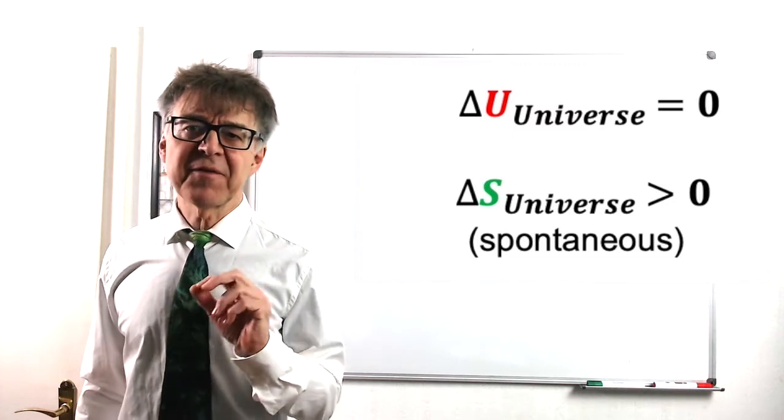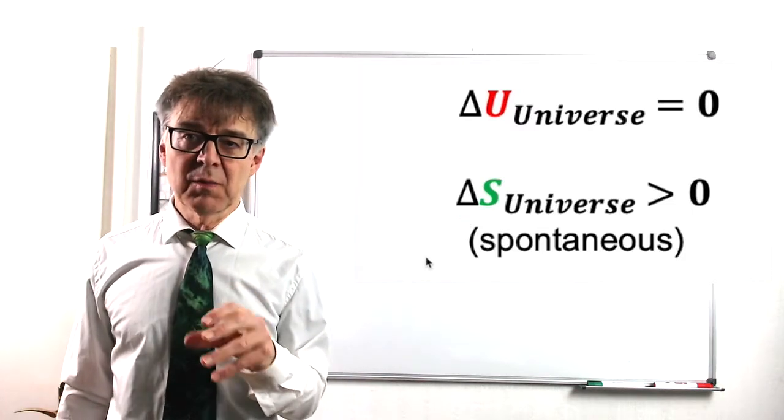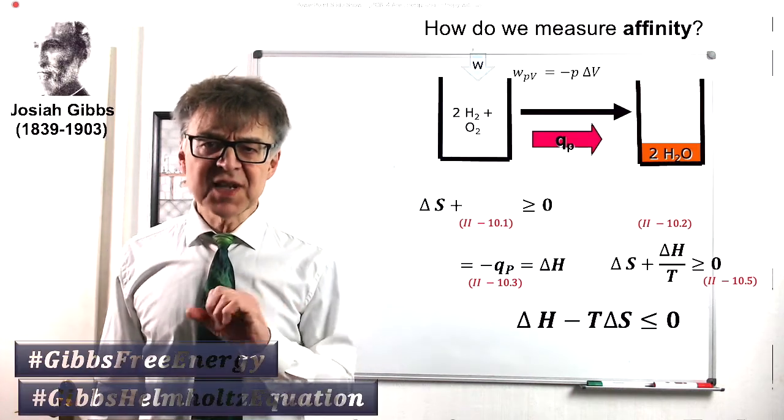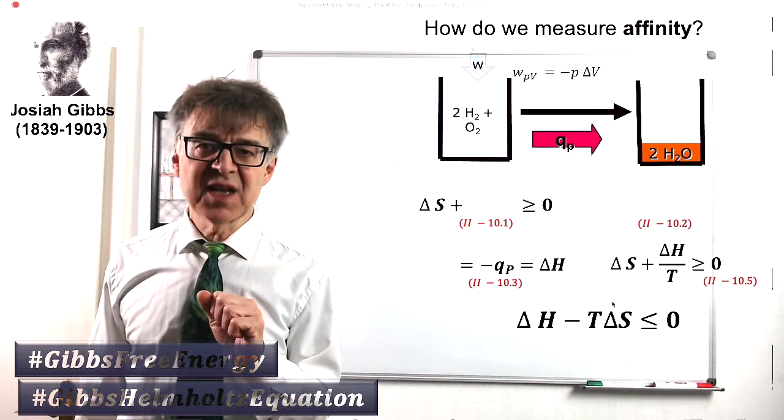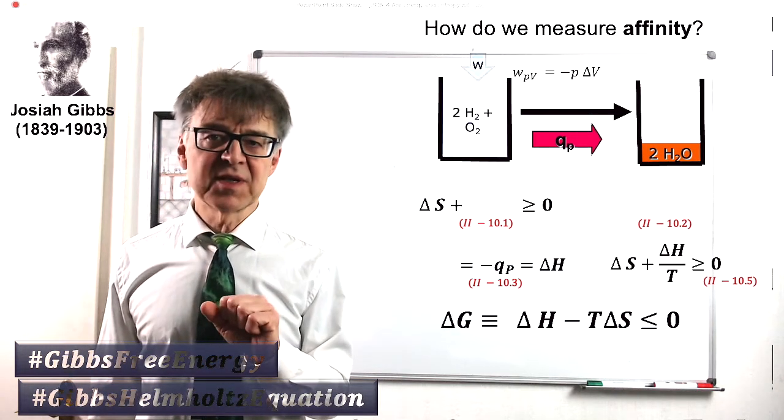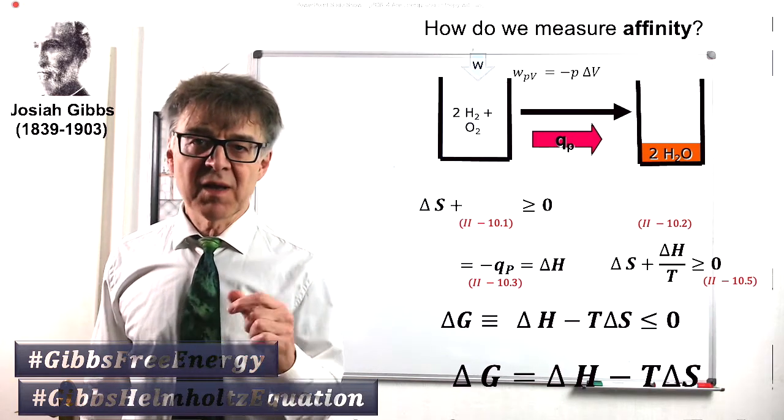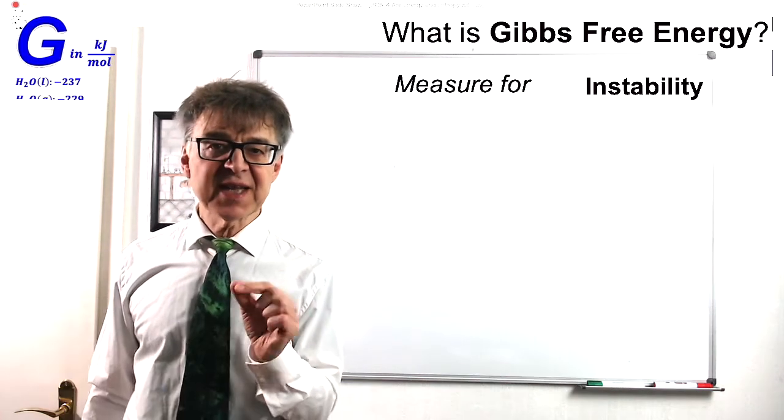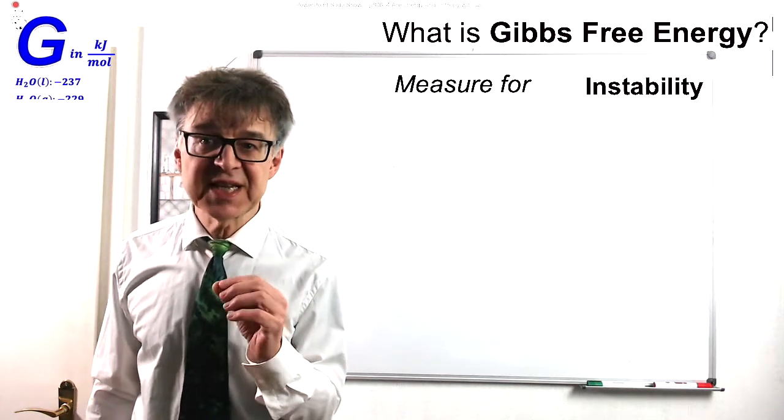If we want to calculate the affinity of a process, it is easier to focus on the system, more specifically on the stability of the system. Mr. Gibbs has derived that the term H minus T times S can only decrease in isobaric, isothermal processes. This term is abbreviated as Gibbs free energy G. The free energy, the combination of these three state variables, is in fact a measure for the instability of a system. Delta G can therefore be seen as a measure of affinity.